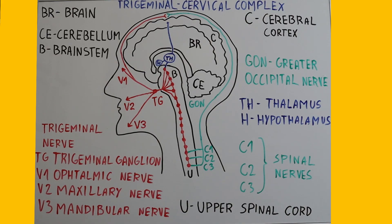The ophthalmic nerve V1 gives off meningeal branches that supply the meninges, the protective layers around the brain. These meningeal branches can interact with the greater occipital nerve, which comes from the cervical spine. This connection is part of what's known as the trigeminal cervical complex and can play a role in conditions like vestibular migraine. The spinal nerves C1, C2 and C3, which originate from the upper spinal cord, closely interact with the lower nuclei of the trigeminal nerve — also part of the trigeminal cervical complex.